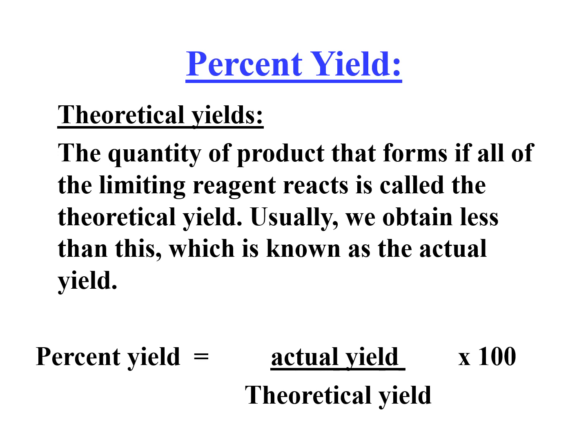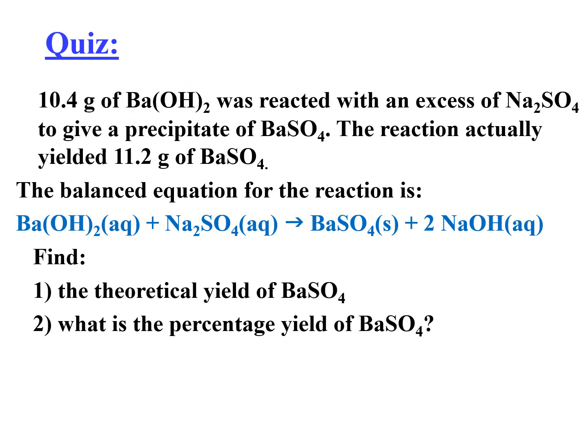Again, the theoretical yield. This is now your quiz assignment. 10.4 grams of barium hydroxide was reacted with an excess of sodium sulfate. To give a precipitate of barium sulfate, the reaction actually yielded 11.2 grams of barium sulfate. You have to use the formula for theoretical yield. In the earlier, I was trying to go back to the earlier slide, pero ayaw na. Find the theoretical yield of barium sulfate and what is the percent yield of barium sulfate.